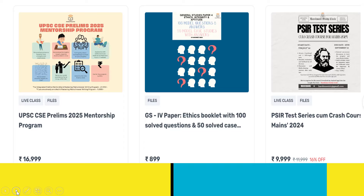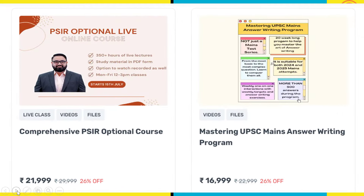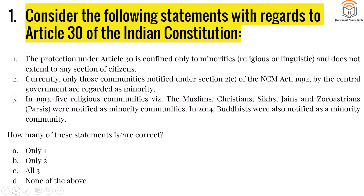Let's begin with the very first question. Consider the following statements with regards to Article 30 of the Indian Constitution. Number one: the protection under Article 30 is confined only to minorities — religious or linguistic — and does not extend to any other section of citizens. Second: currently only those communities notified under Section 2(c) of the National Commission for Minorities Act 1992 by the central government are regarded as minorities.